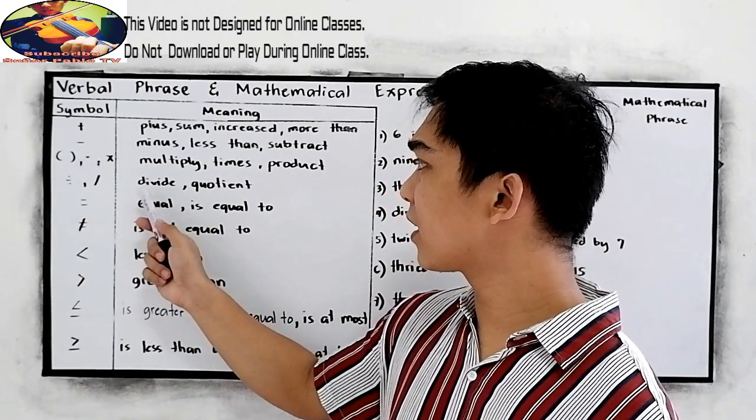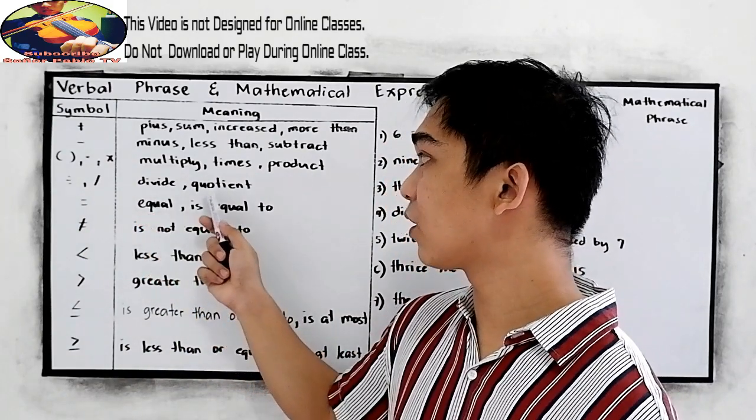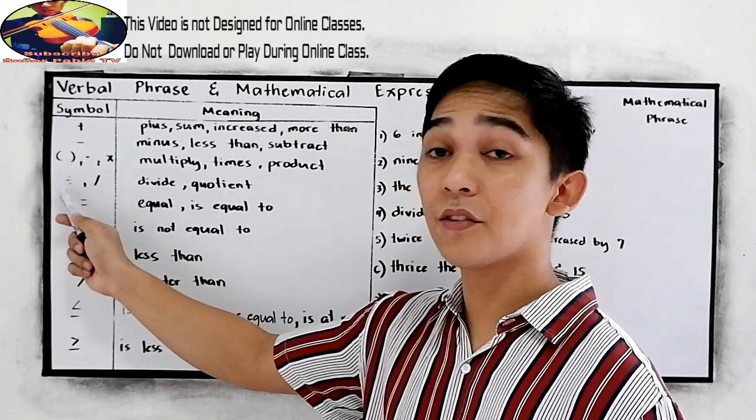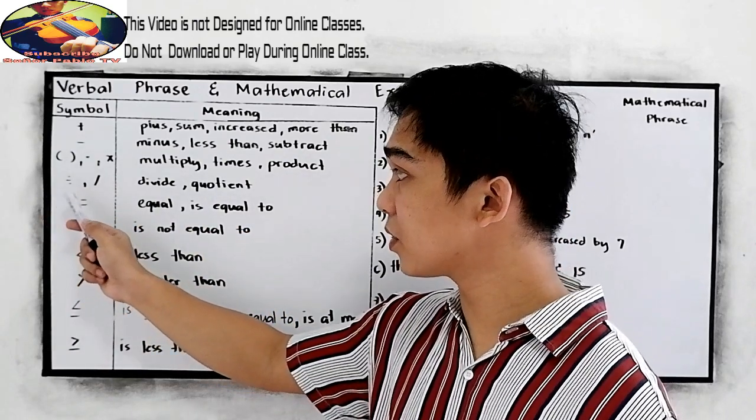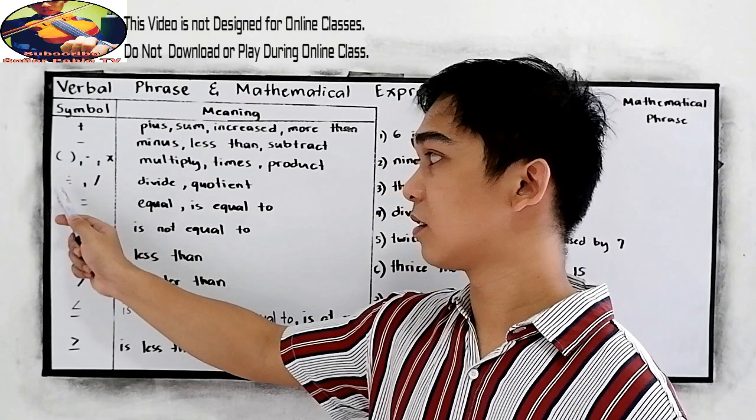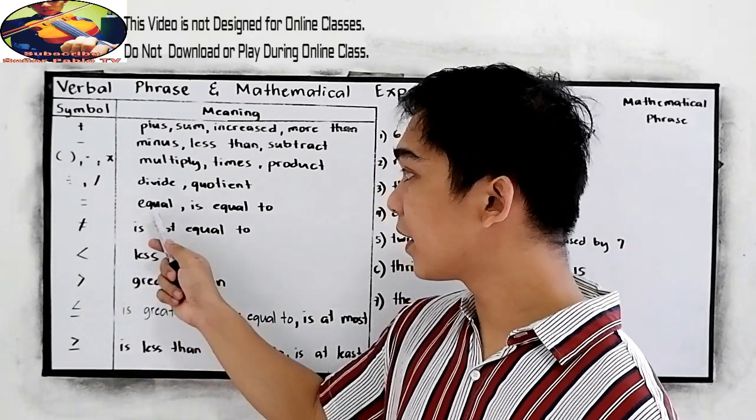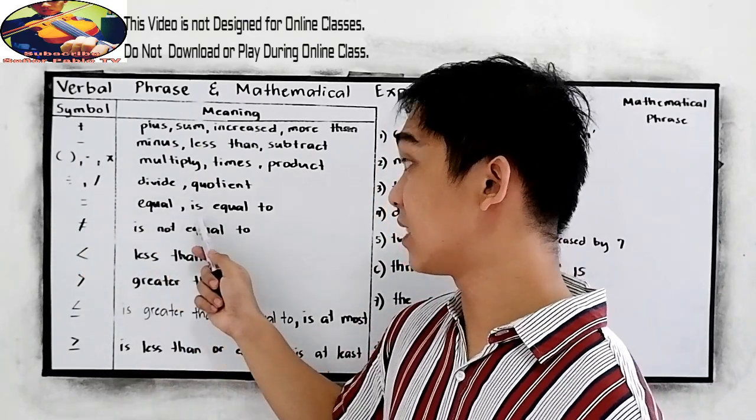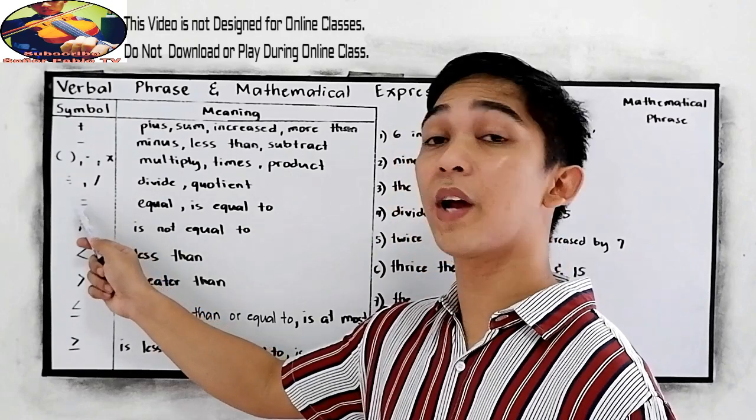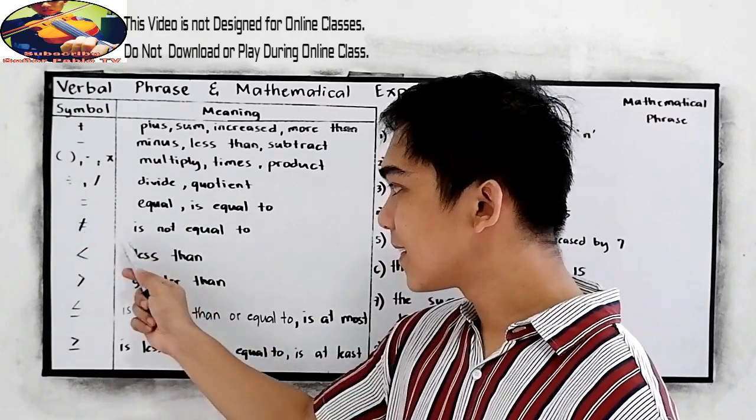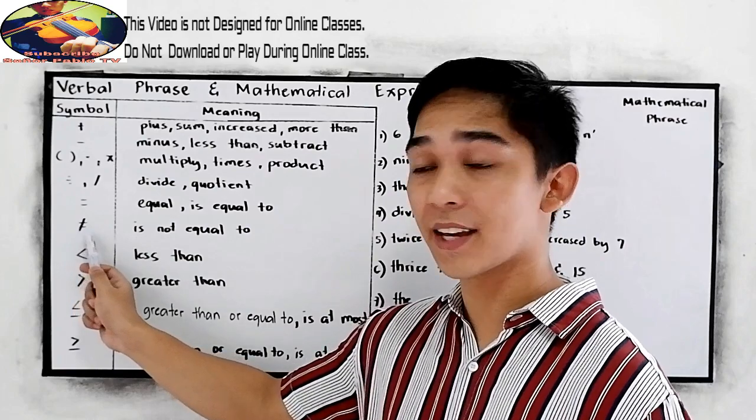And if you will encounter the words divide and quotient, the following symbols you are going to use. And equal is equal to, you need to write the equal sign. Is not equal to, this will be the sign.